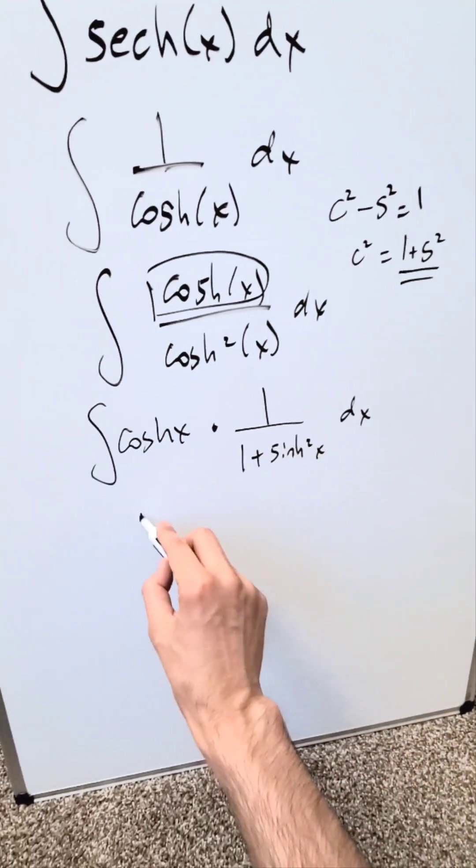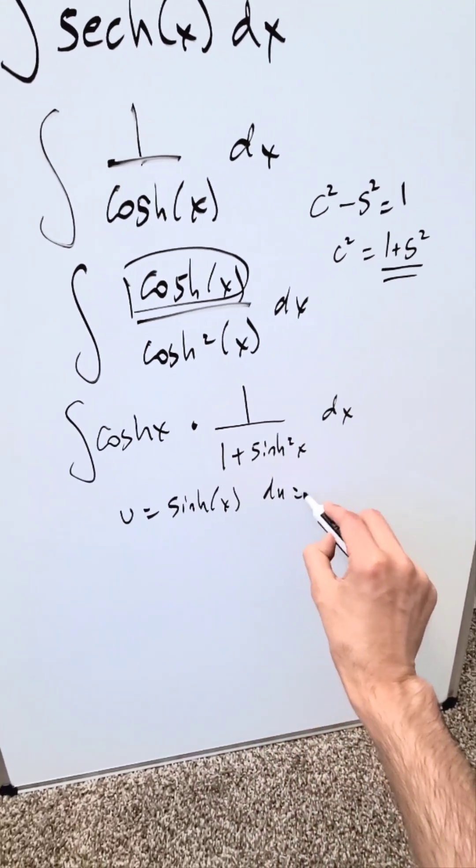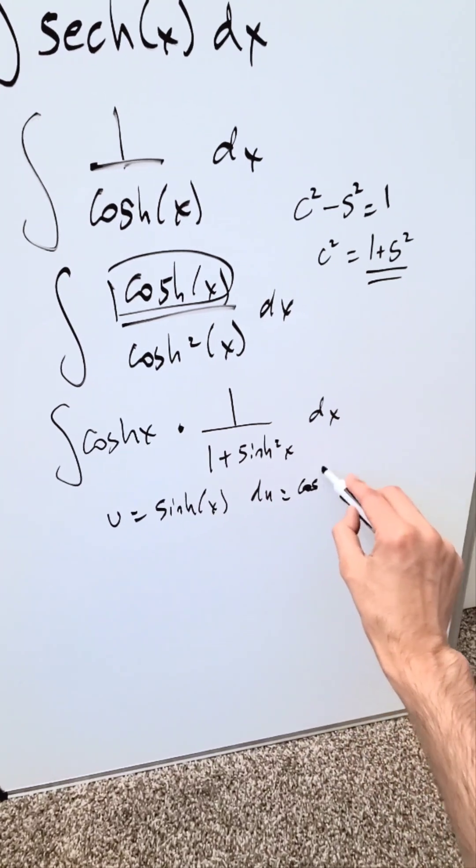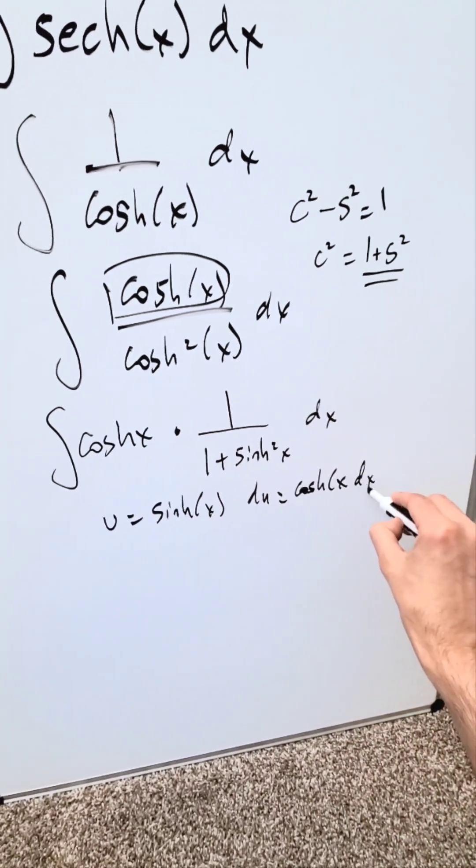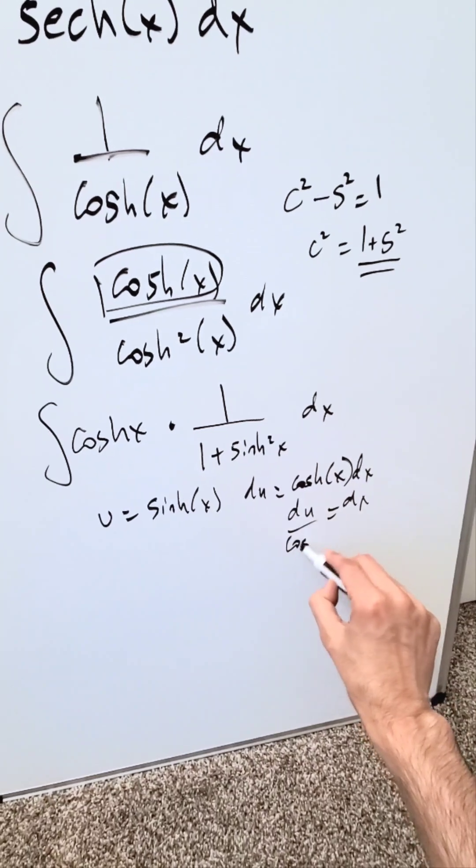U substitution will come into play. If u equals your hyperbolic sine x, then du equals the derivative of this, your hyperbolic cosine x dx, and then dx equals du divided by hyperbolic cosine x.